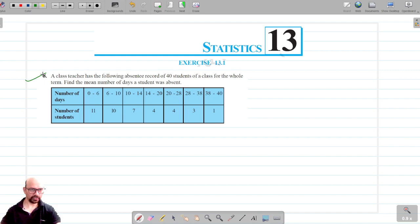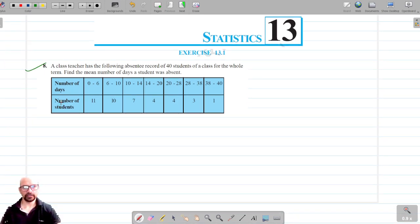Before question number 8, we're once again going to find the mean number of days a student was absent. Given below is the absentee record of 40 students of a class for the whole term.